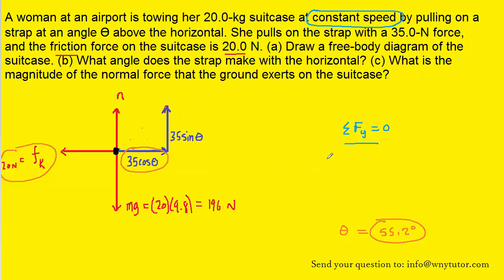We can now move on to part C, which is asking for the magnitude of the normal force. Well, to calculate the normal force, we can turn to the sum of the forces in the y direction. We will note that there are several forces acting in the y direction.